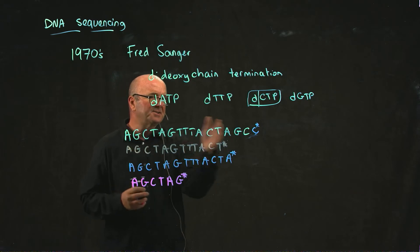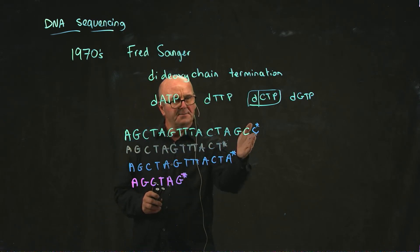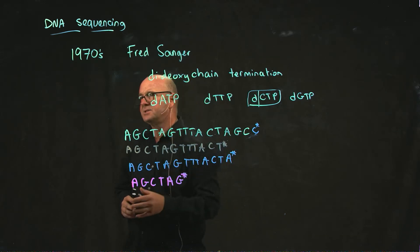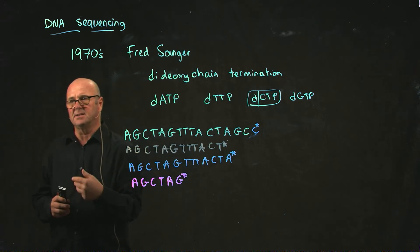So what happens is that as you replicate this DNA over and over and over again, at different points the chain gets terminated by the addition of the dideoxy nucleotide.